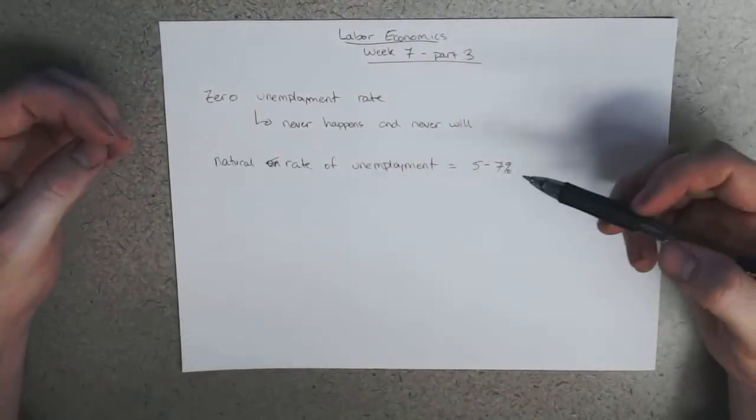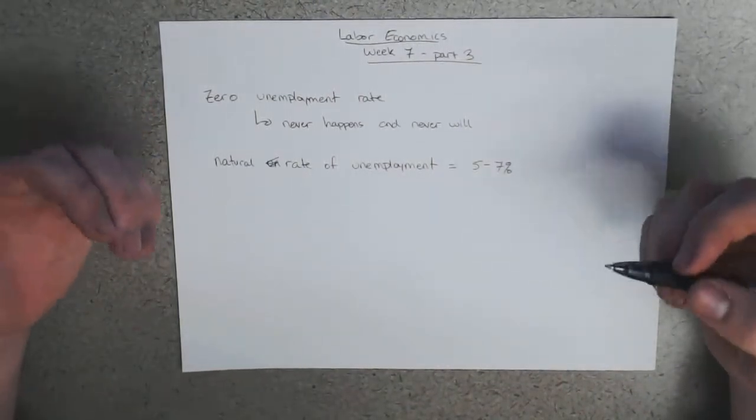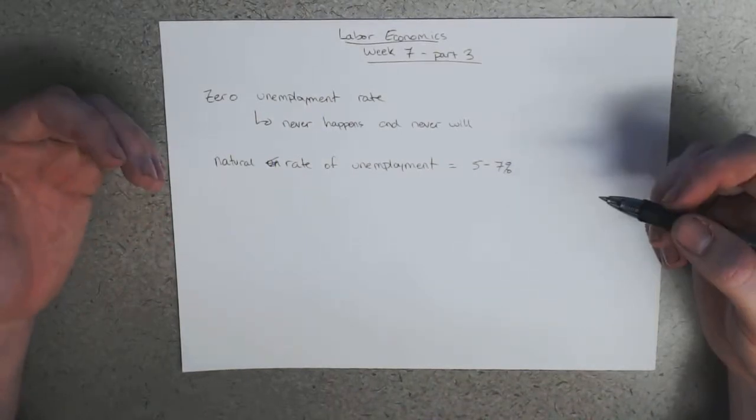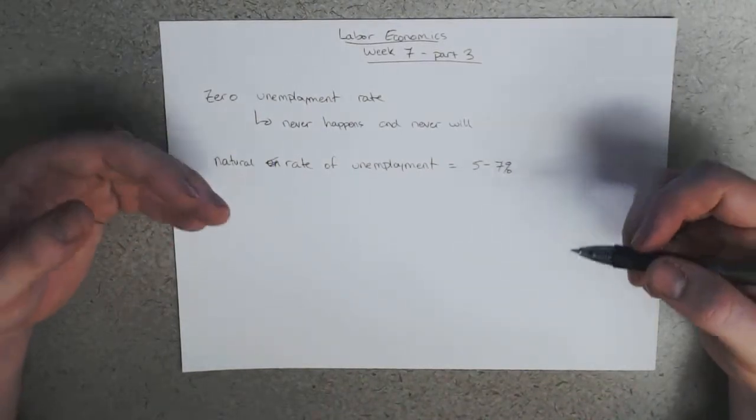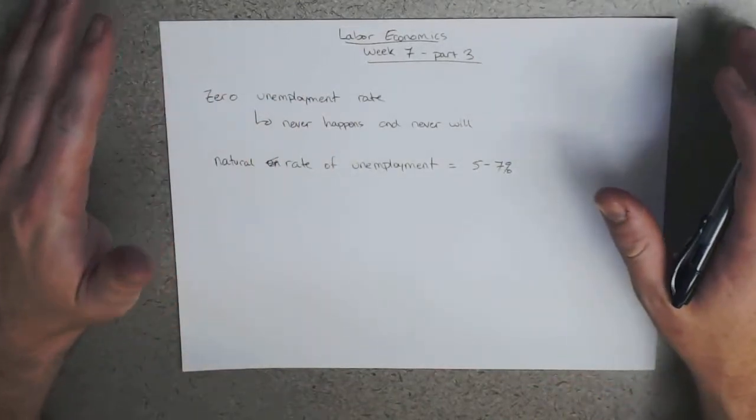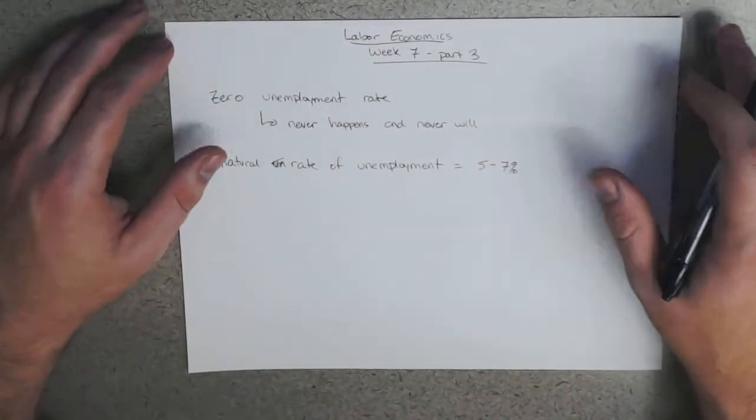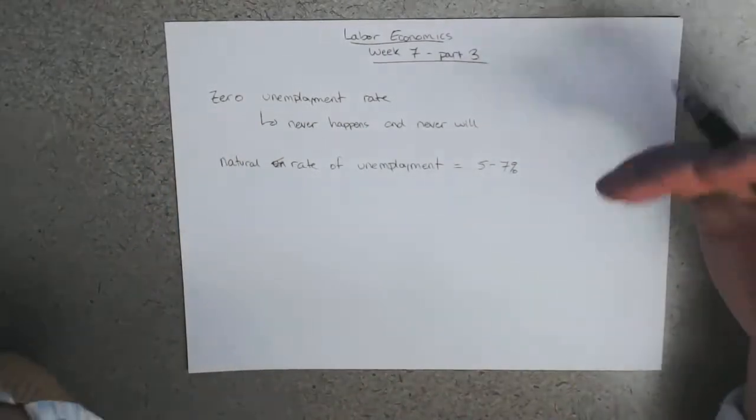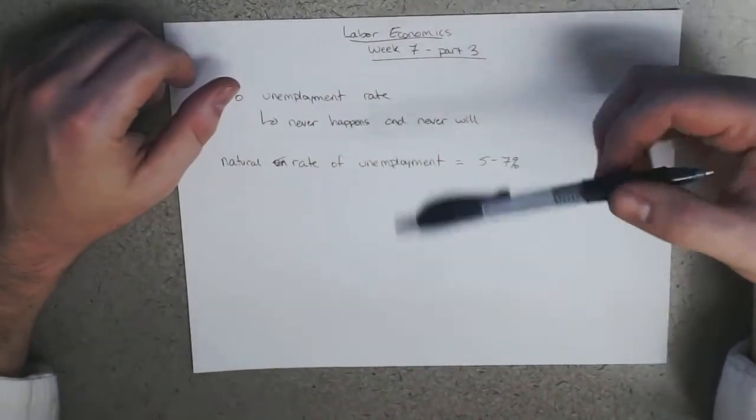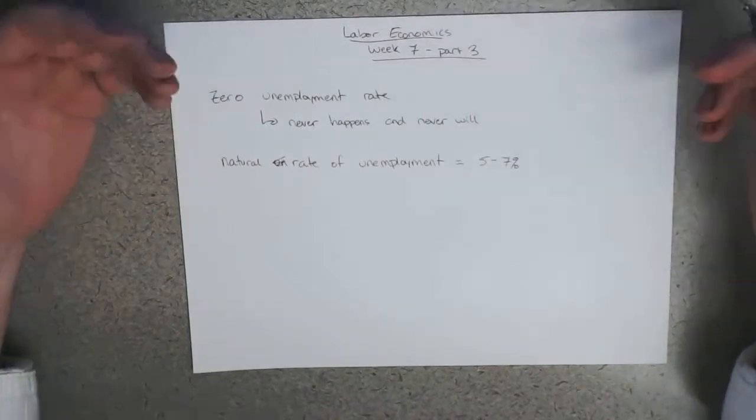But basically the intuition is that there is some amount of unemployment that we should expect to exist even when everything is great. When everything is fantastic, we should still expect some people to be unemployed. And why is that? Why would that be like a good thing?